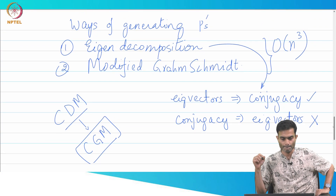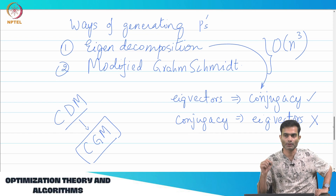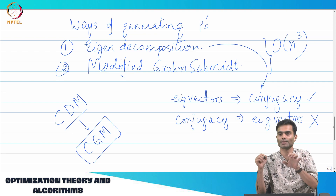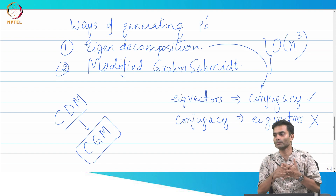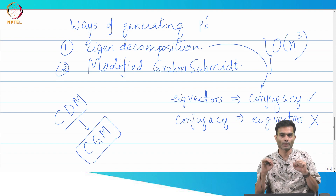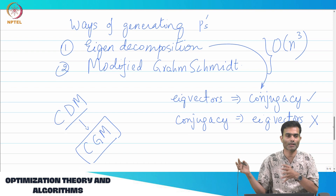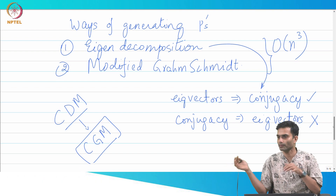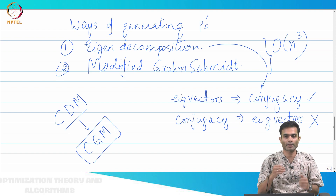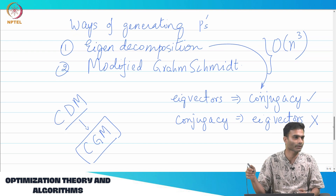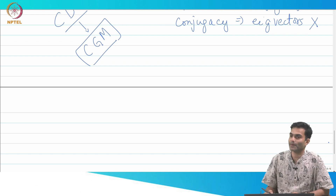What we have done so far is shown the geometric intuition, and we have had a proof which told us that at most n steps is required. Now there is again one very powerful theorem in linear algebra which helps to formalize this. The proof is a slightly longer proof; I am going to do half the proof to give you the flavor of it. The remaining half, if you are interested, you can read it in the book. Let me state the theorem — it is called the expanding subspace theorem.